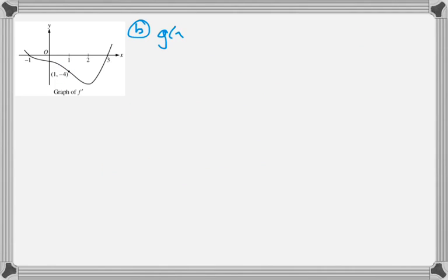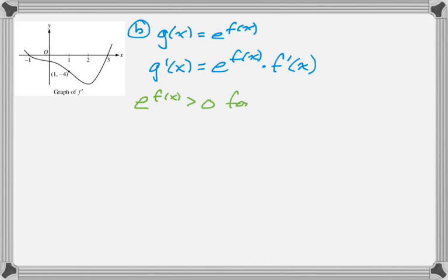Alright, next thing is we're going to find where g has a local maximum. And we've already found this derivative, so I'm just jotting it down again for you. And we've got to think about this. So e to the f(x) is always greater than 0.